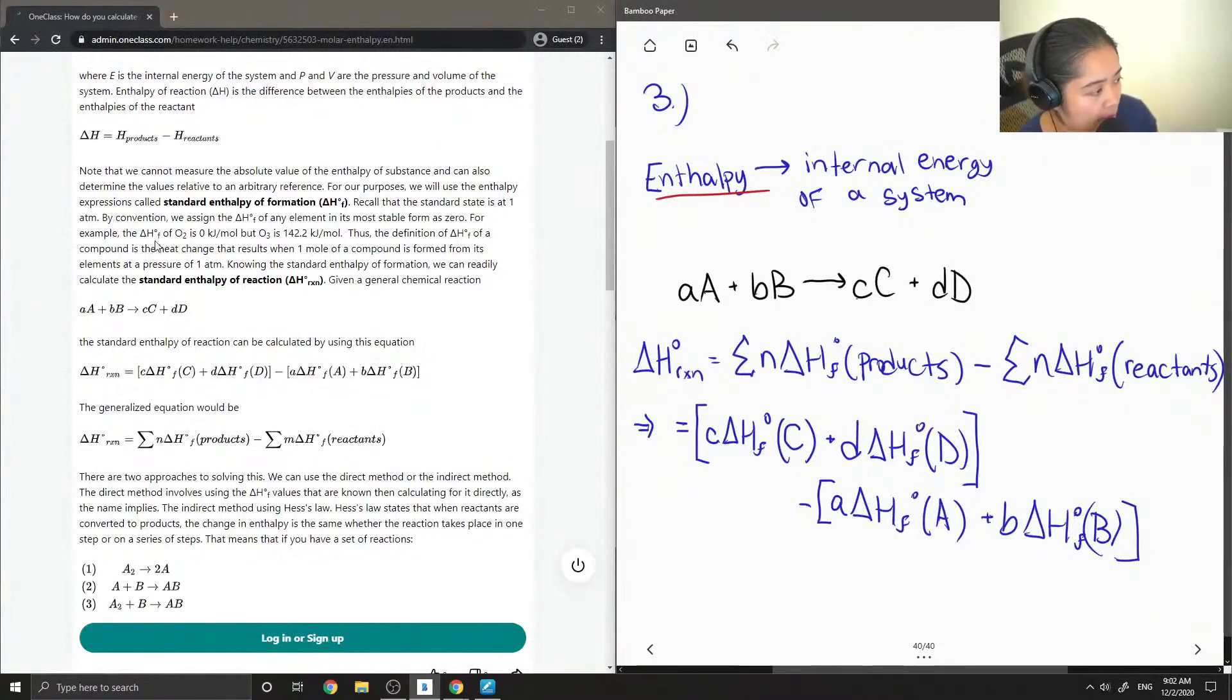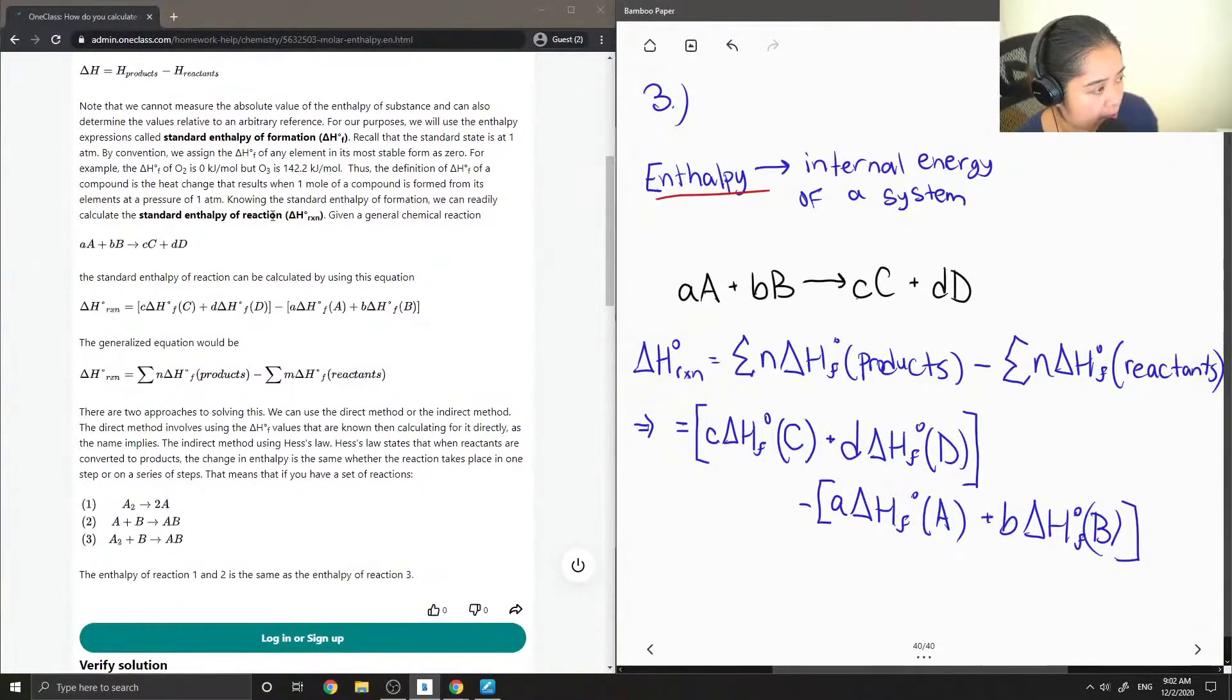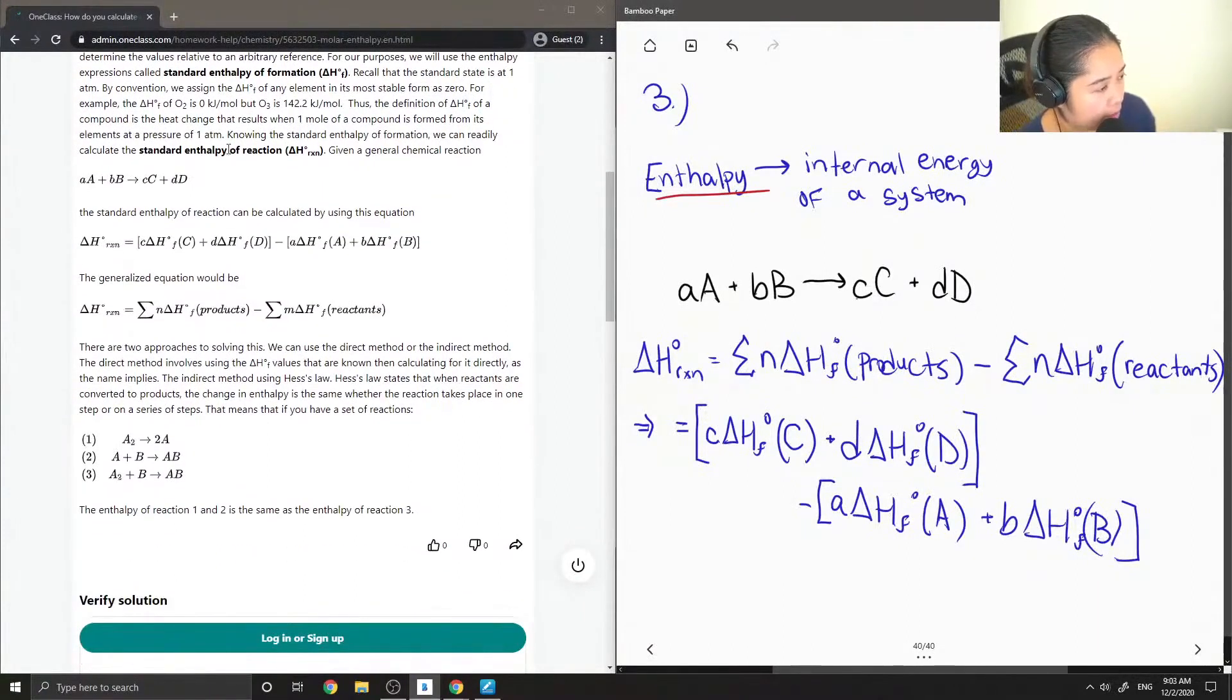For example, the delta H of formation of O2 is zero, but for O3, it's 142.2 kJ per mole. Thus the definition of delta H of a compound is the heat change that results when one mole of a compound is formed from its elements at a pressure of 1 atm. Knowing the standard enthalpy of formation, we can readily calculate the standard enthalpy of reaction given a chemical equation.